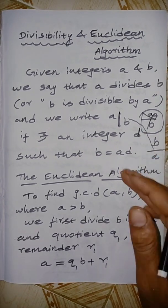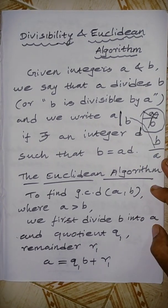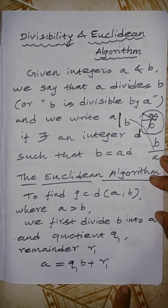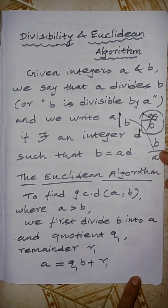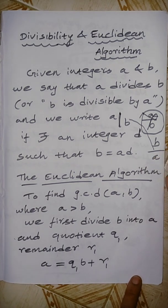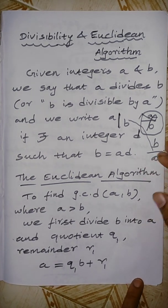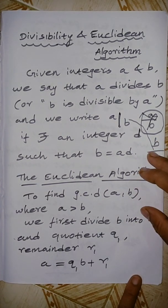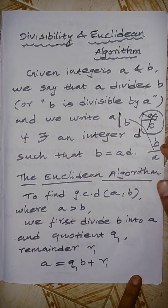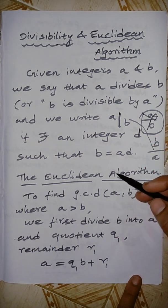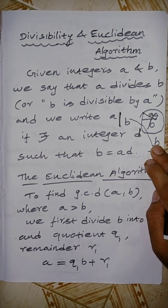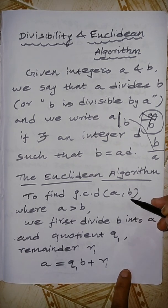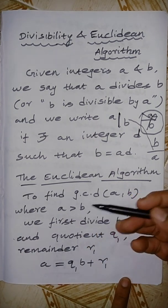The Euclidean algorithm is a very familiar topic — it appears in CBSC, state board, TET, and TRB exams. It is used to find the GCD, that is the Greatest Common Divisor, also known as the Greatest Common Factor or Highest Common Factor, of two integers a and b.